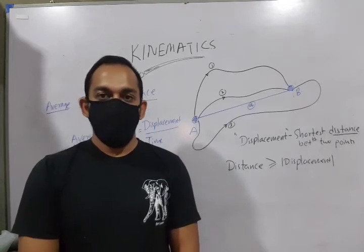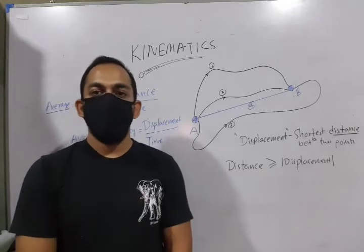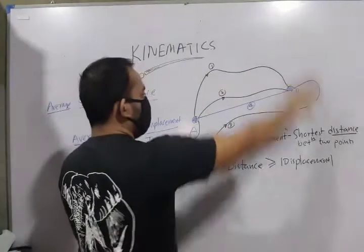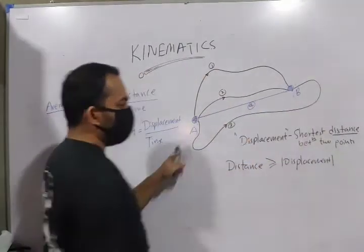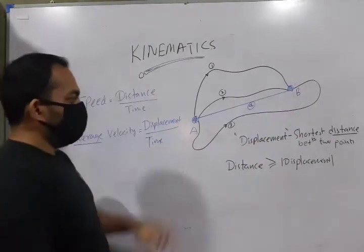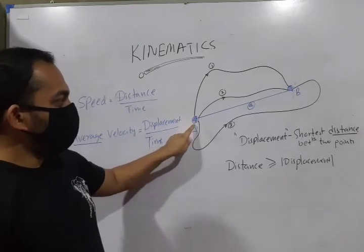The first thing we will look at is the distinction between the distance and displacement. Suppose there are two points. Let's assume that this is a map. There are two points, two locations, A and B. And there's a vehicle here. The vehicle is supposed to go from A to B.